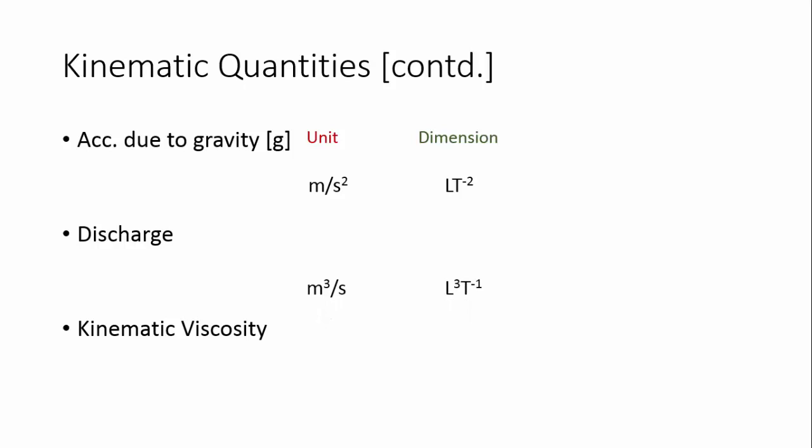Discharge has a unit of meter cubed per second, so meter cubed is written as L cubed and per second is written as T to the power minus 1, giving L³T⁻¹. For kinematic viscosity, the unit is meter squared per second, so L squared stands for meter squared and T to the power minus 1 stands for per second, giving L²T⁻¹.